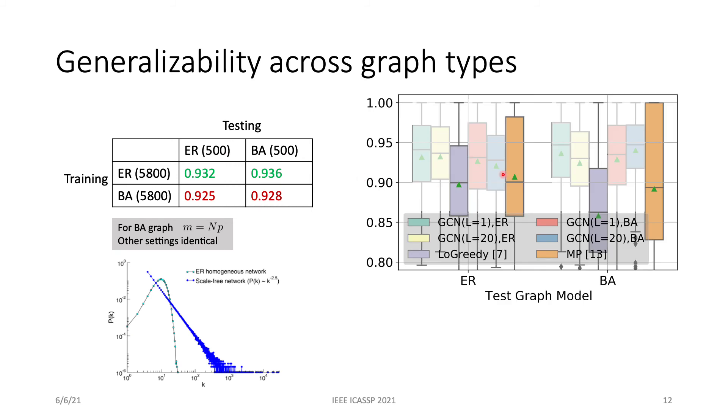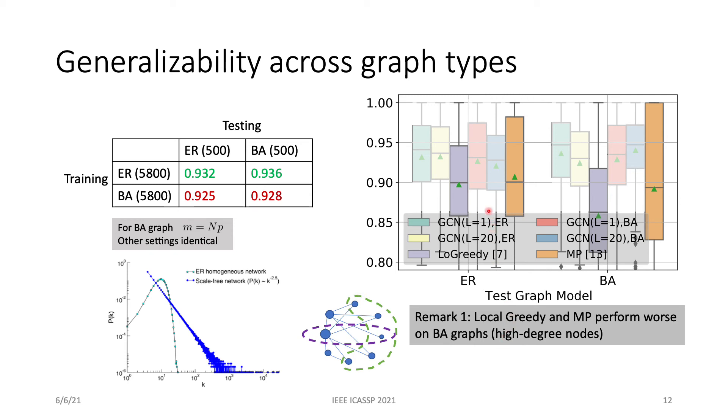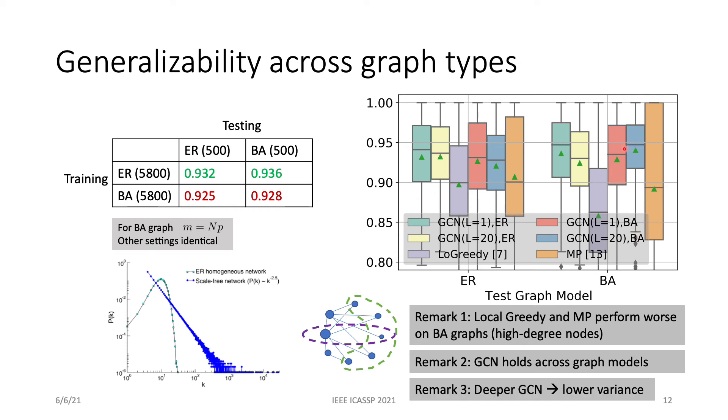The results in terms of the approximation ratios are shown in the box plot here. Notice that the local greedy in purple as well as the message passing in orange, they all perform worse on BA graphs. This is because for local greedy, if the high-degree nodes in the BA graph happen to have a large weight, then local greedy will be trapped into a bad solution. In comparison, GCN can perform consistently across ER and BA graphs. Similarly, no matter if GCN is trained on ER or BA graphs, their performance is also similar. These results show that GCN is able to learn the topology of the network and generalize across different graph models. We also found that deeper GCN has lower performance variance compared to shallow ones.